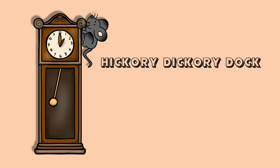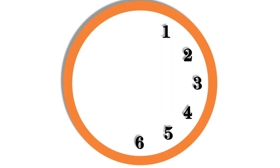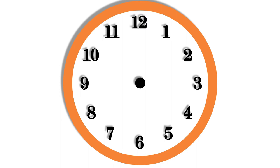A clock tells us the time. This is the face of the clock. There are 12 numbers on the face of the clock. How many numbers, children? There are 12 numbers on the face of the clock.